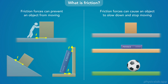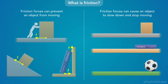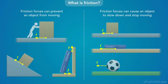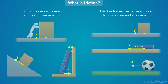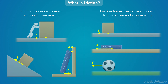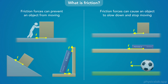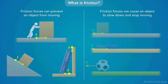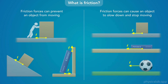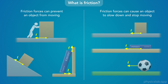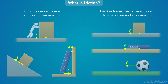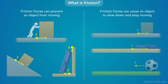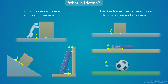Friction forces can also act on a moving object and cause it to slow down and stop moving. If an object is sliding or rolling across a surface, there's a friction force acting against its motion. If there are no other forces to keep it moving, the object will slow down and stop. We talked about that in the lesson on Newton's first law of motion — moving objects don't stop on their own; there must be a net force causing them to slow down, and that force is usually friction.